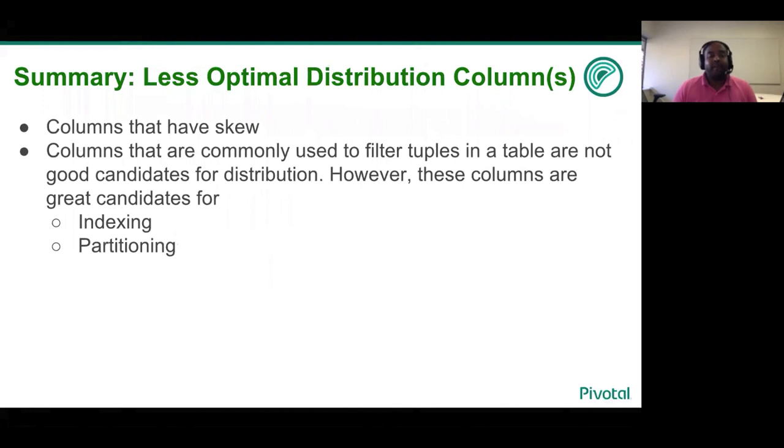There are also certain columns in which users typically tend to filter. For instance, you want to find out orders that are maximum profitability, or orders that are less than or greater than a particular price range. These are great filtering columns, but they are not good distribution columns. They can be used instead for indexing or partitioning.